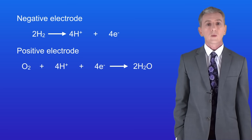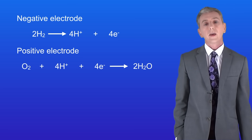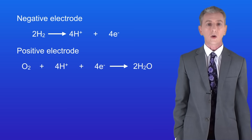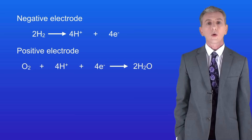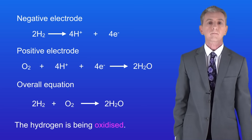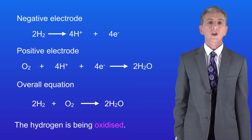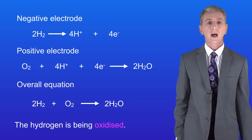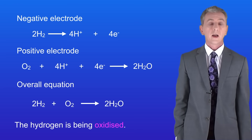Essentially what's happening in the hydrogen fuel cell is that hydrogen is combining with oxygen — in other words the hydrogen is being oxidised. Here is the overall equation for the hydrogen fuel cell. As you can see, hydrogen fuel cells use two simple gases, hydrogen and oxygen, to produce electricity and the only waste product is water.